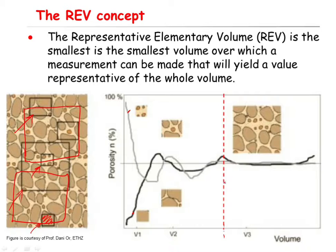So if you use any sample with a size equal to or larger than this REV scale or REV size, you will obtain a nearly similar porosity value fluctuating around the constant value. And this is the concept of representative elementary volume. I hope this video helps you to better understand the concept of REV. Please feel free to subscribe to this channel so that you get updated when I upload new videos. Thank you.